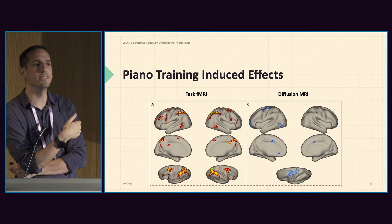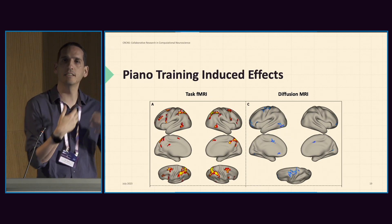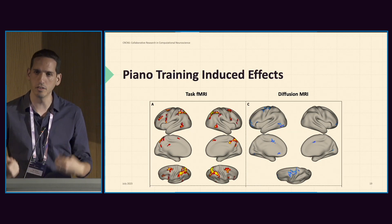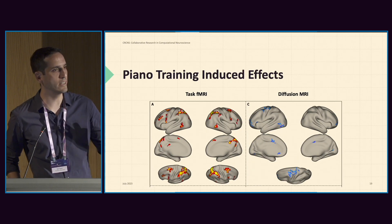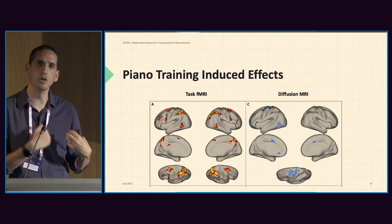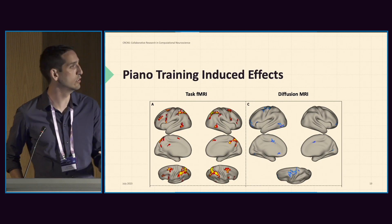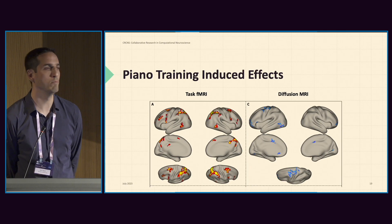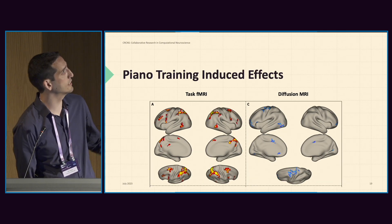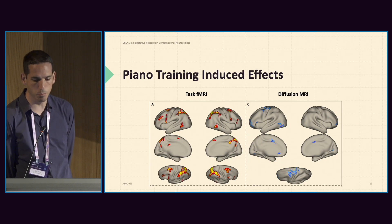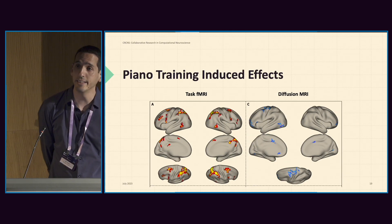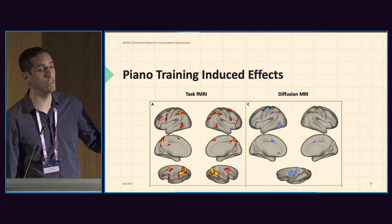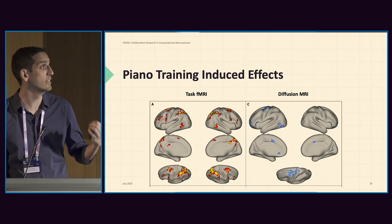On the left, we can see changes in brain activity — they passively listen to the trained sequence and to an untrained sequence before and after training — and we see increasing activity in motor areas during passive listening to an auditory stimulus. But we can also see modifications in microstructure in diffusion for the same participants: in blue, a decrease in diffusivity. The changes are somewhat overlapping in location.